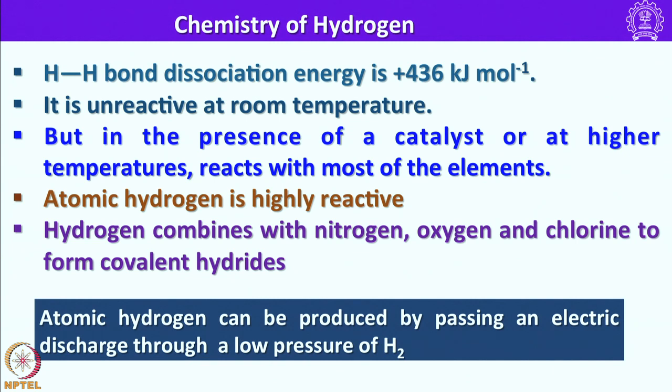Atomic hydrogen can be produced by passing an electric discharge through a low pressure of hydrogen. Atomic hydrogen is very reactive and when it combines with other elements it usually forms three types of chemical compounds: it can lose an electron to form H+, it can gain an electron to form H−, or it can share the electron with another element to form a covalent bond.